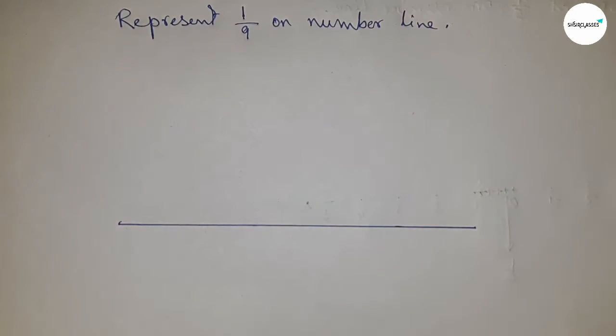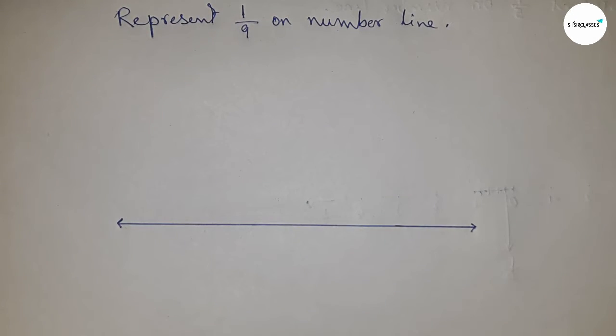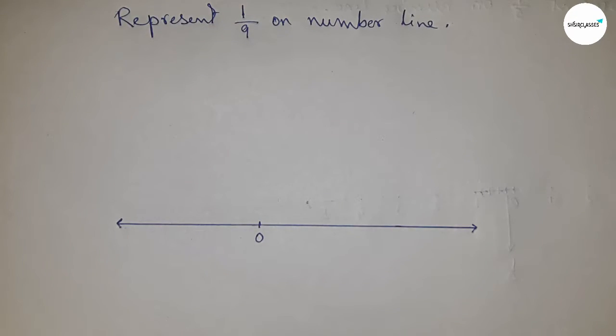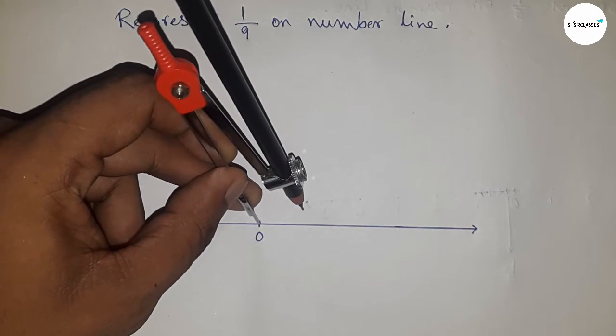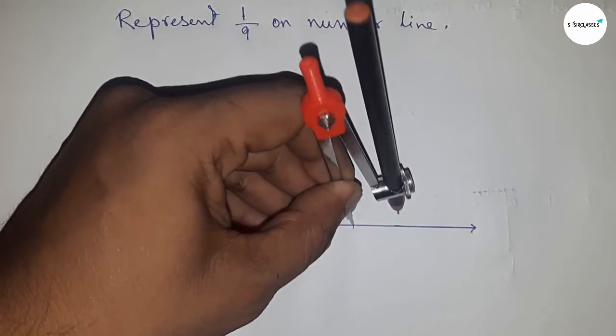First, draw a line of any length and mark the ends with arrows. Mark zero here. Next, we need to mark the numbers on the line, so take any length using a compass and begin marking the numbers.